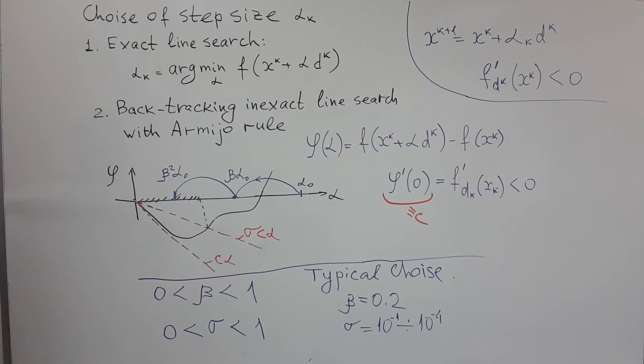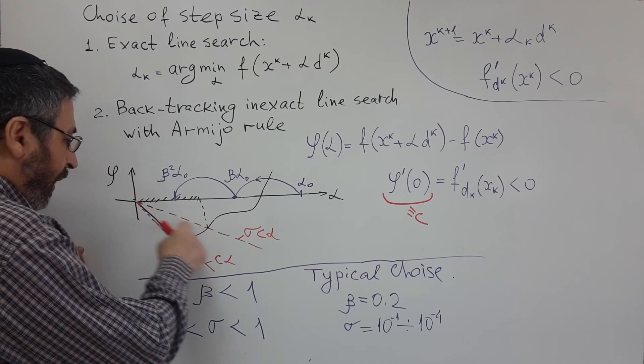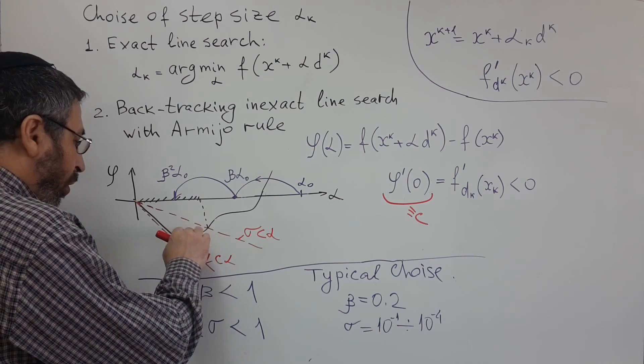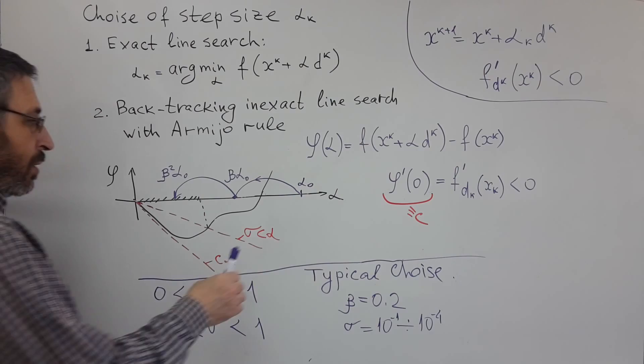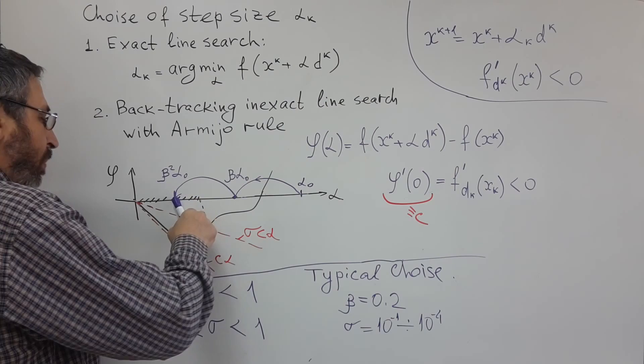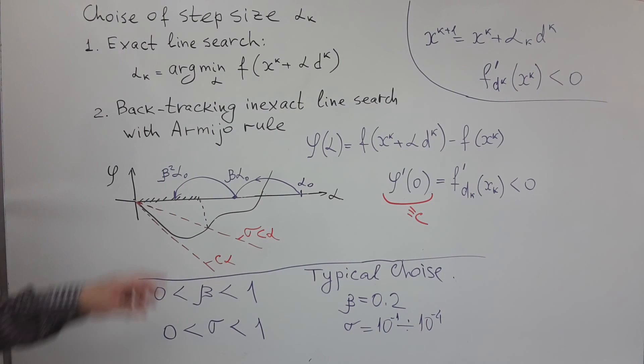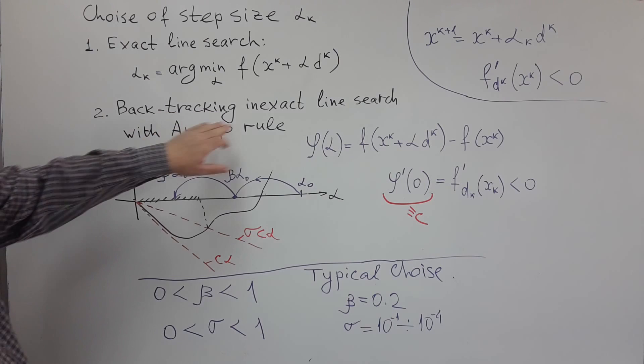And what we will require, we will require that our function value phi of alpha will be lower than this second straight line. So, this is our feasible area. Like I said, we started with some relatively large alpha, we decreased it, multiplying by beta, until we reached this condition. And this will give us the step size provided by backtracking inexact line search with Armijo rule.